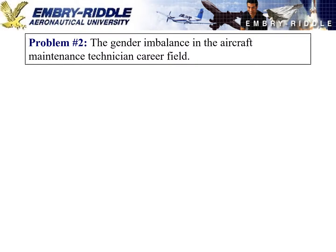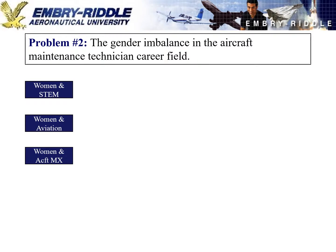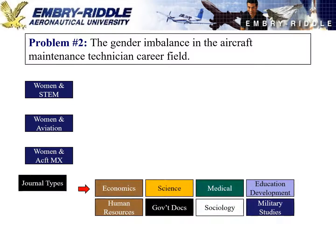In this case, we're going to look at the gender imbalance in the aircraft maintenance technician career field. For our level-two headings, we're going to narrow the topic down through the literature review — starting with the broad topic of women in science, technology, engineering, and math; then narrowing to aviation; and then narrowing further to aircraft maintenance specifically. Unlike the previous example, I want to start with the journal types to make the connection between topics and journal types clear.